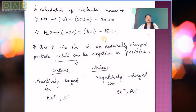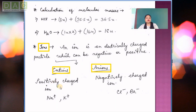Next, we will discuss ions. An ion is an electrically charged particle which can be negative or positive. There are two types of ions: cations and anions. Cations are positively charged ions and anions are negatively charged ions. Examples of cations include sodium ion (Na⁺) and potassium ion (K⁺). Examples of anions include Cl⁻ (chloride) and Br⁻ (bromide).